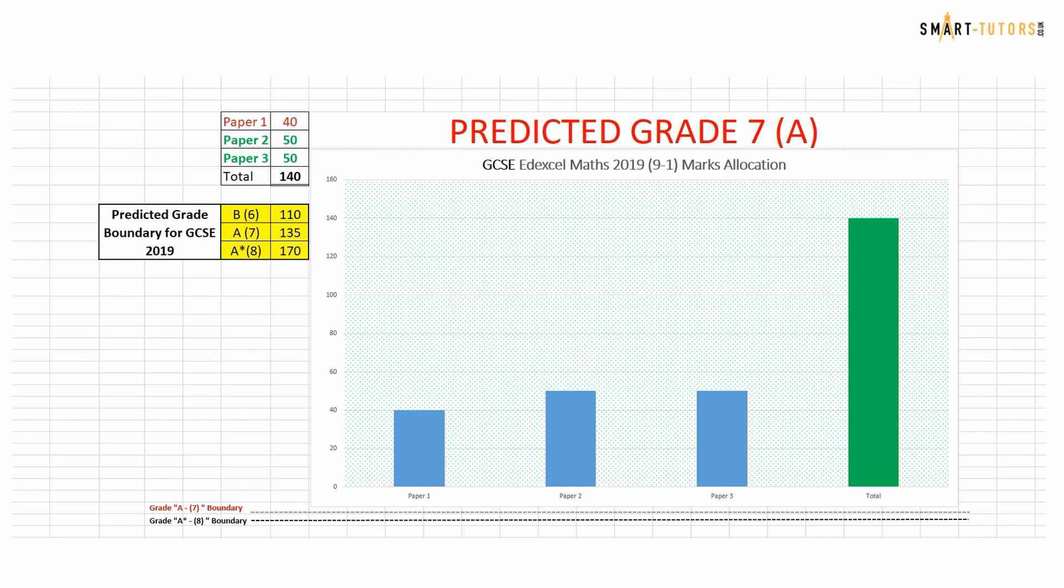You already completed one paper and that is out of 80 marks. According to the critics and all the comments in social media, the paper is not that easy. Assume that you got half of the paper marks, that means 40 marks. And if you decently do paper 2 and paper 3 with 50 marks each, you can get 140 which secures an A position level 7. If you get paper 2 very low marks, 40 again, then your predicted grade is going to be reduced to 6B.